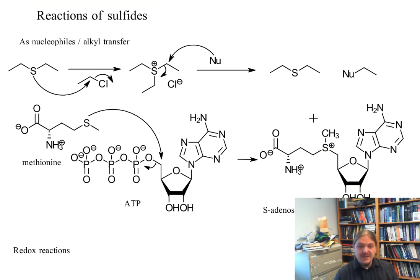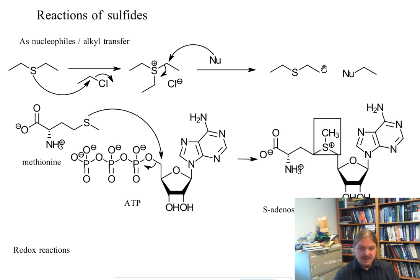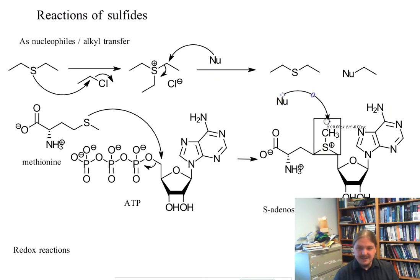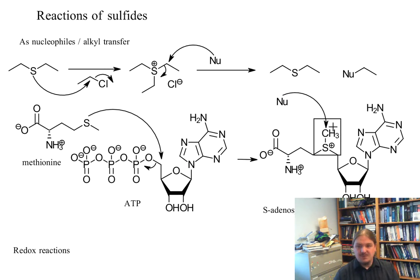is a really important methyl transferase agent. So this methyl group here in the box is really, really electrophilic, and all kinds of biological nucleophiles—from proteins to nucleic acids—if you need a methyl group on something in a biological situation, S-adenosylmethionine is one of the possible sources of that methyl group.